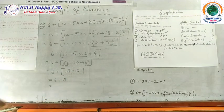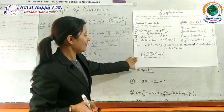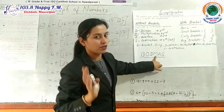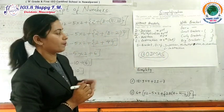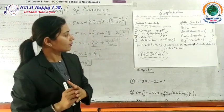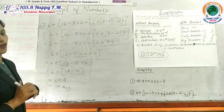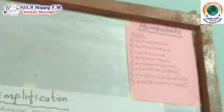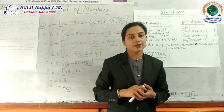To summarize, follow the BODMAS rule: B means Brackets, O means Of or Order, D means Division, M means Multiplication, A means Addition, and S means Subtraction. If you follow the BODMAS rules, your simplification will be correct. Today's homework is to solve the simplification problems given and follow the BODMAS rules. You may take help from your senior brothers and sisters. Thank you students, goodbye.